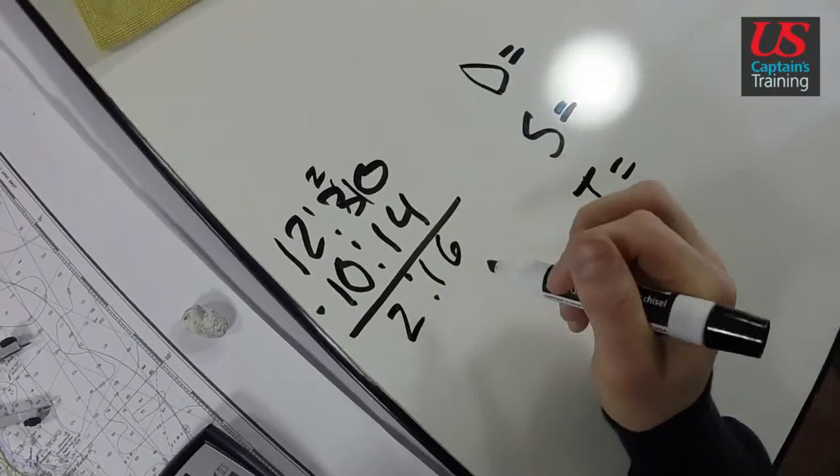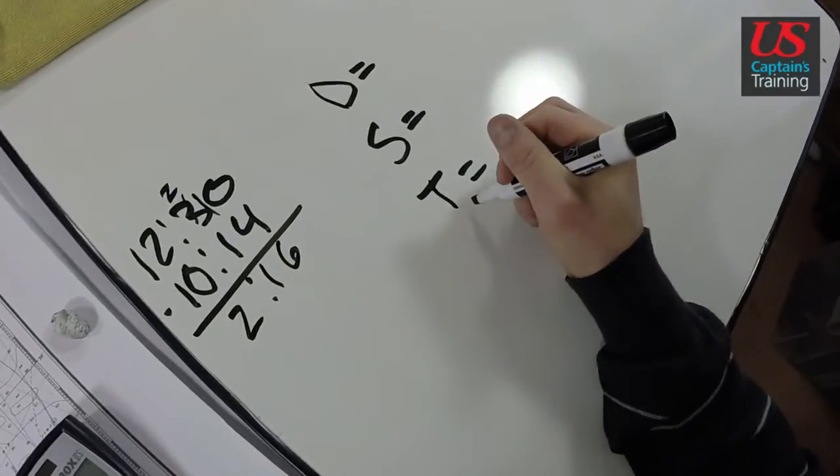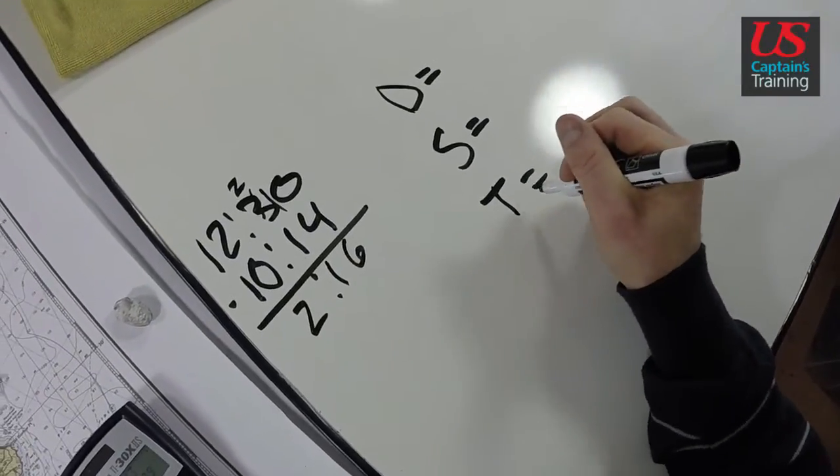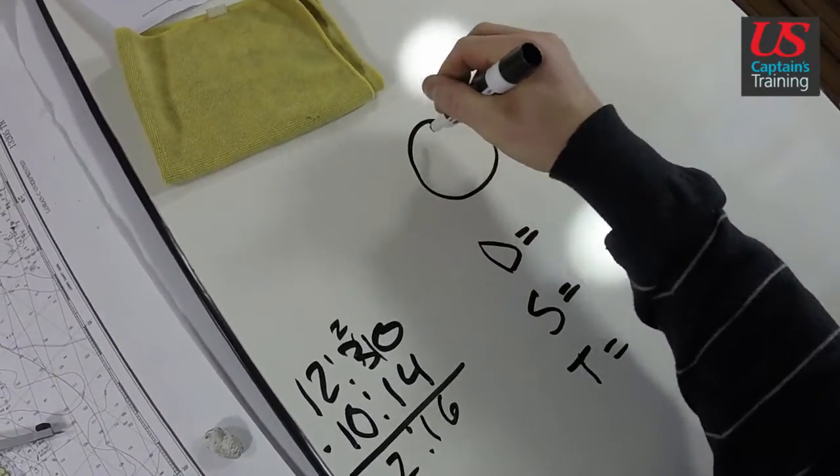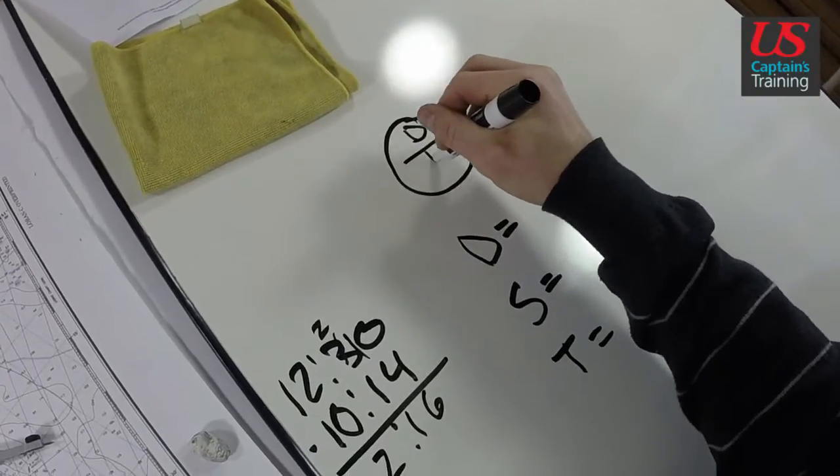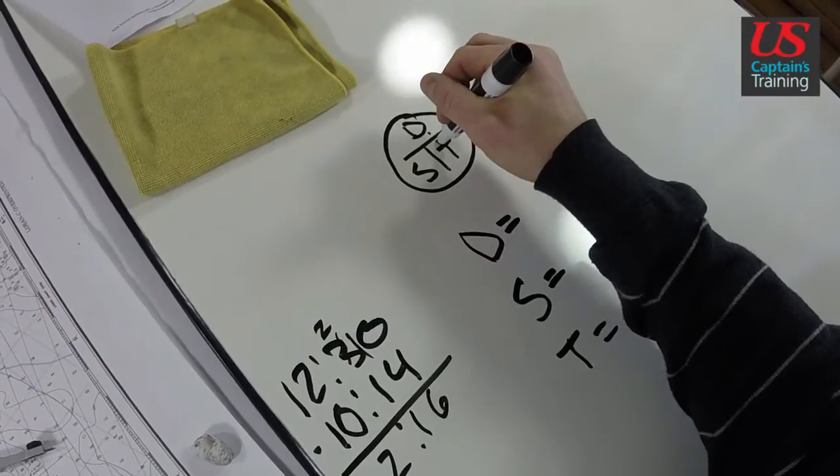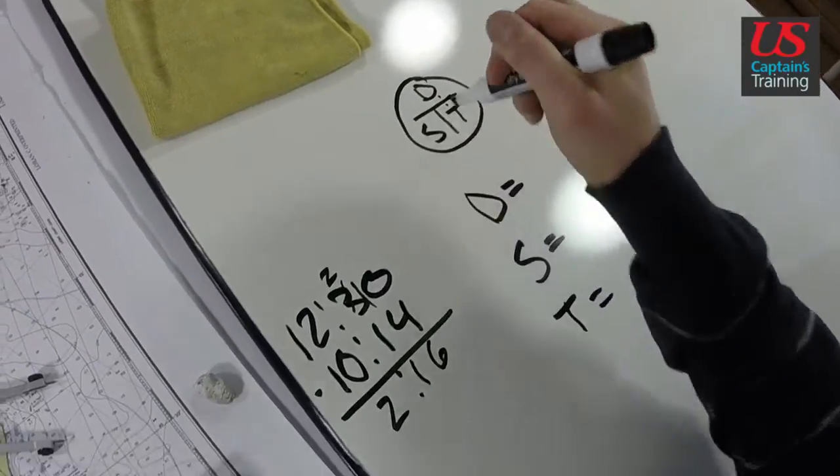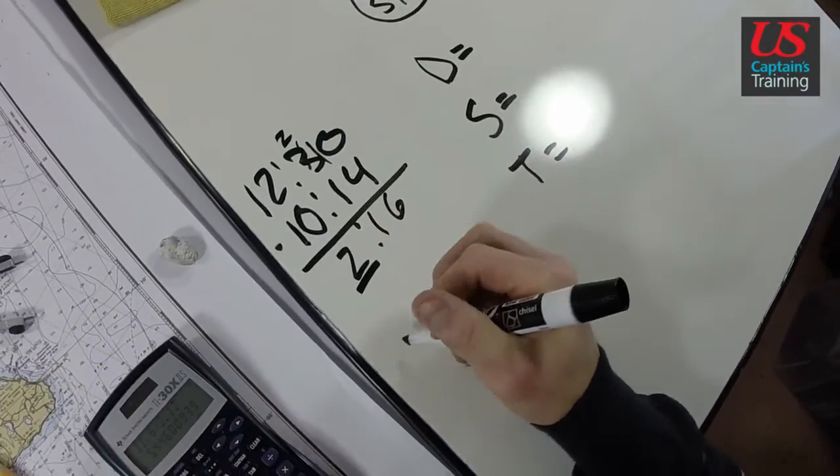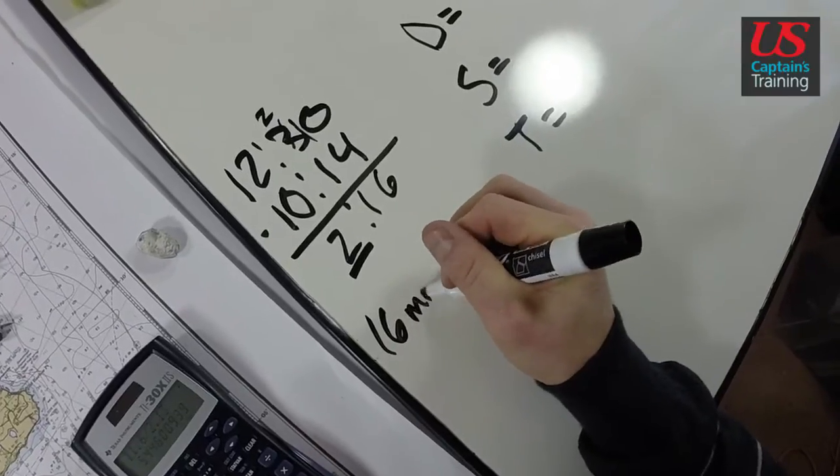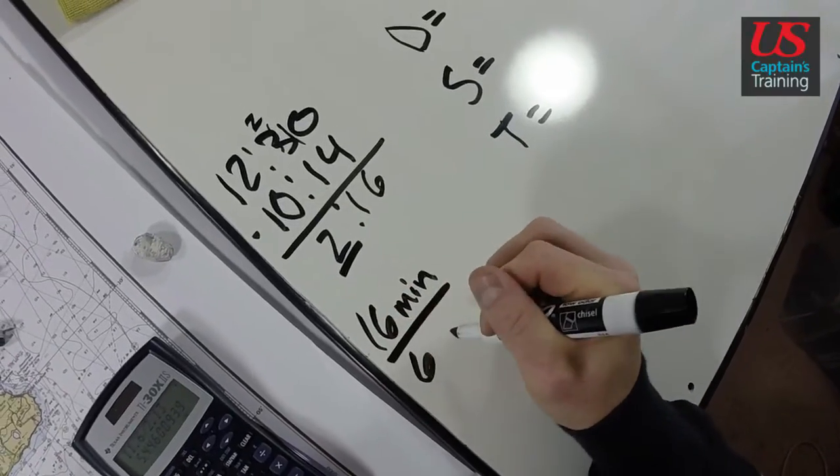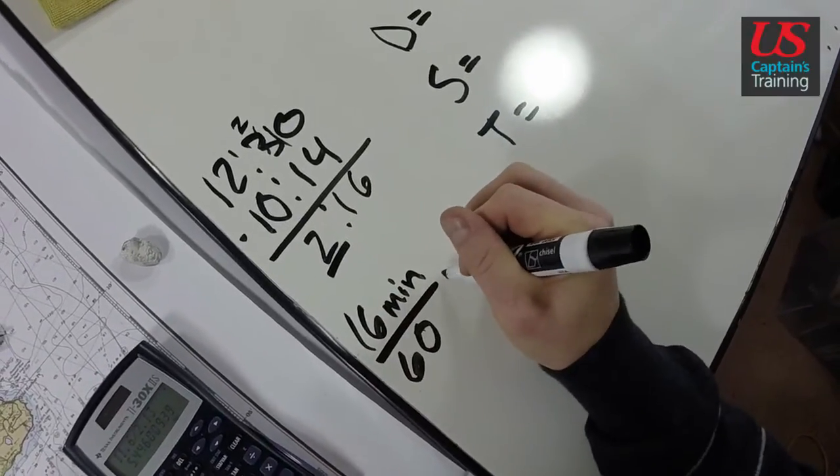This time must be in hours for it to go into this formula. Speed is equal to distance divided by time. This is just in hours, so 2 is okay, but 16 minutes we need to divide by 60 to get hours.